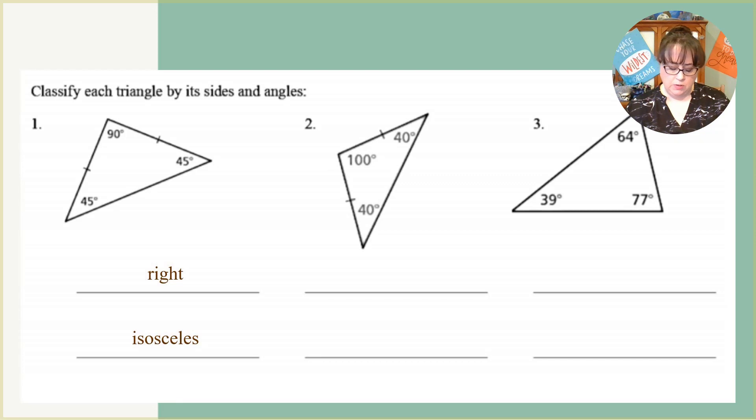On number two, you can see that we have one obtuse angle, and we have two tally marks marking those two sides congruent. So that makes this an obtuse isosceles triangle.